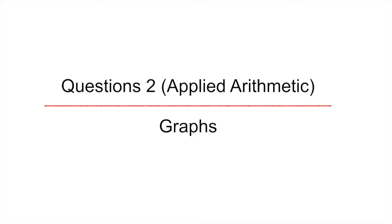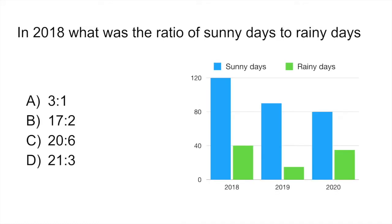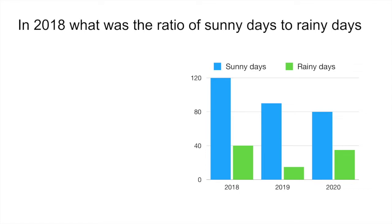Question two is an applied arithmetic problem, and it involves bar graphs. It says, in 2018, what was the ratio of sunny days to rainy days? So before doing this problem, let's quickly remind ourselves how we read these sort of graphs. First thing, make sure you read the legend. So the legend here is these little squares that are telling you what the different colors of the graph represent.